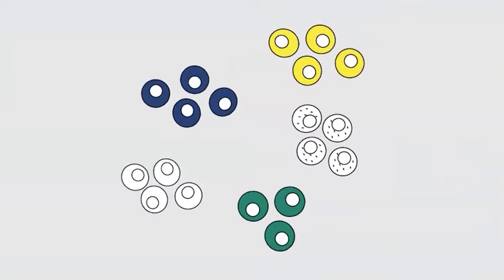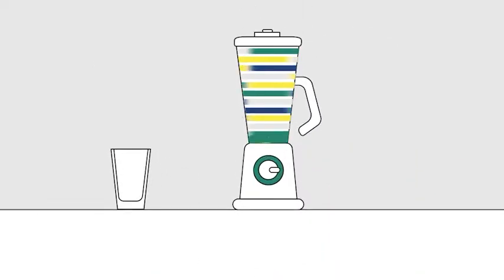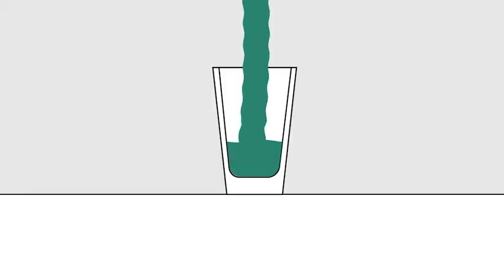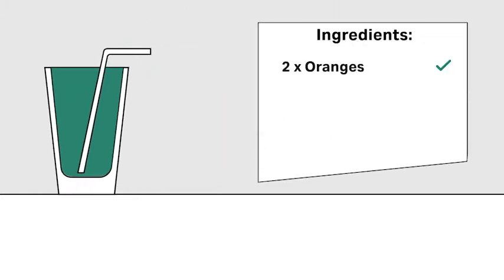Human tissue contains multiple cell types. In this analogy, the different types of fruit represent different cell types. If you're asked to identify each fruit and how much of that fruit type is in a smoothie you're drinking, it's a pretty tough job. You might get a few right, but may miss some flavors altogether. The smoothie in this case represents bulk analysis.